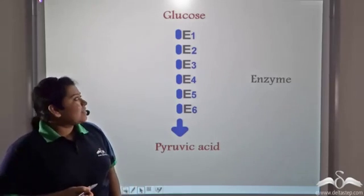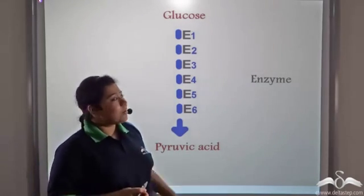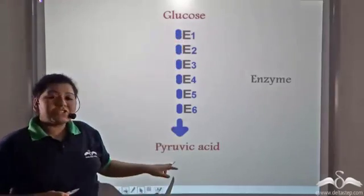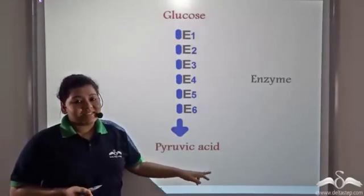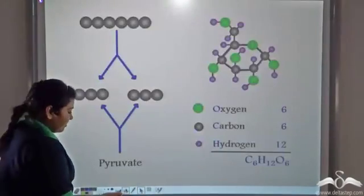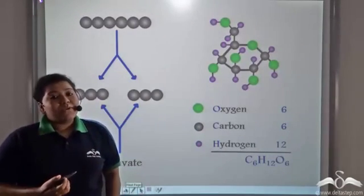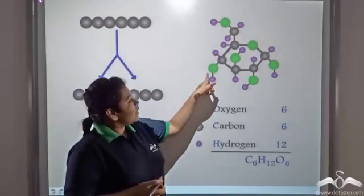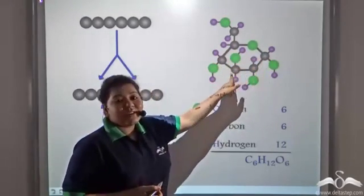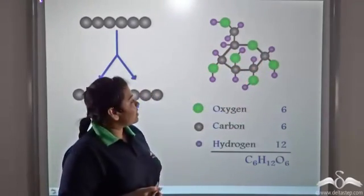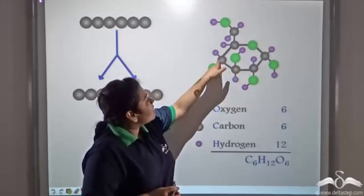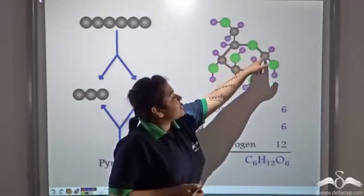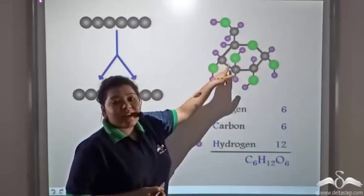So these enzymes help the breakdown of glucose into pyruvic acid. Now, glucose is a 6-carbon compound. See, this is the chemical structure of glucose.